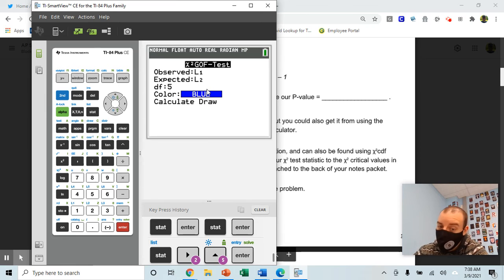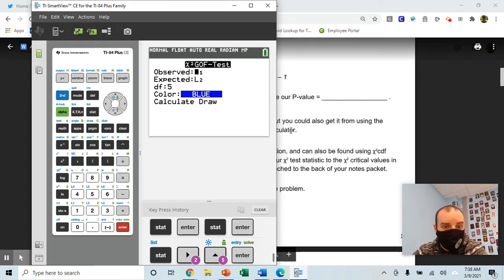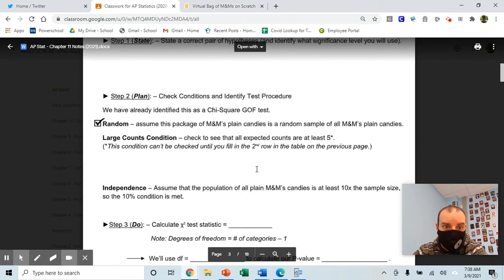From that point, you can either, like we've been doing, reject the null hypothesis and have evidence of the alternative, or fail to reject the null hypothesis and not have evidence of the alternative.